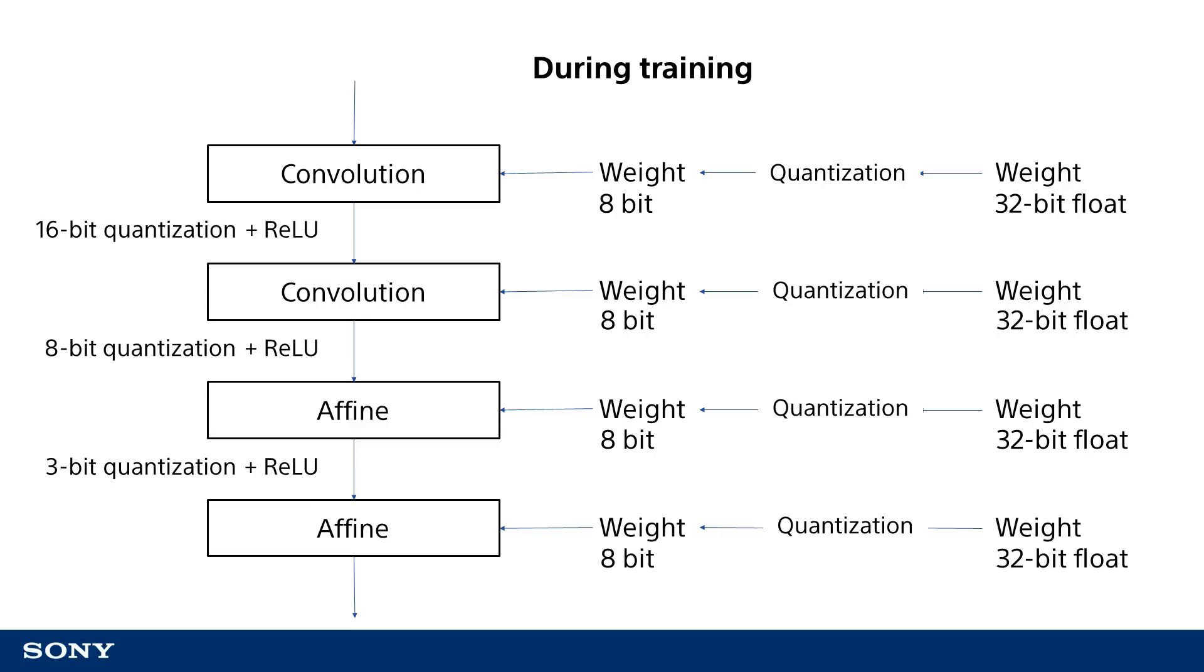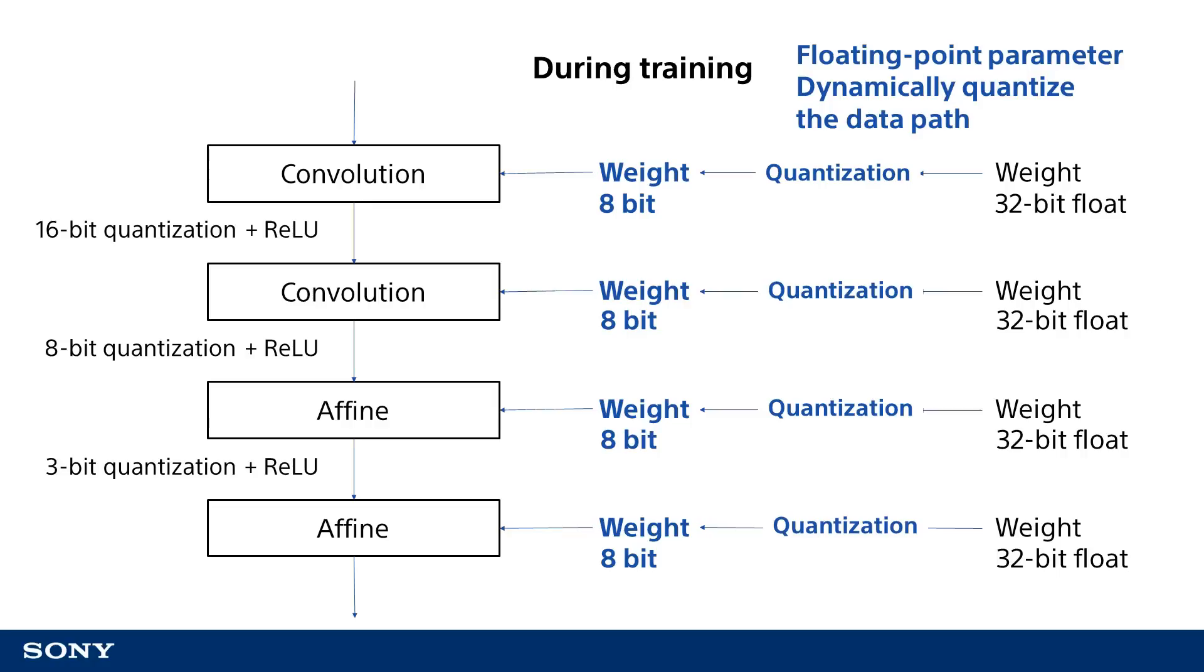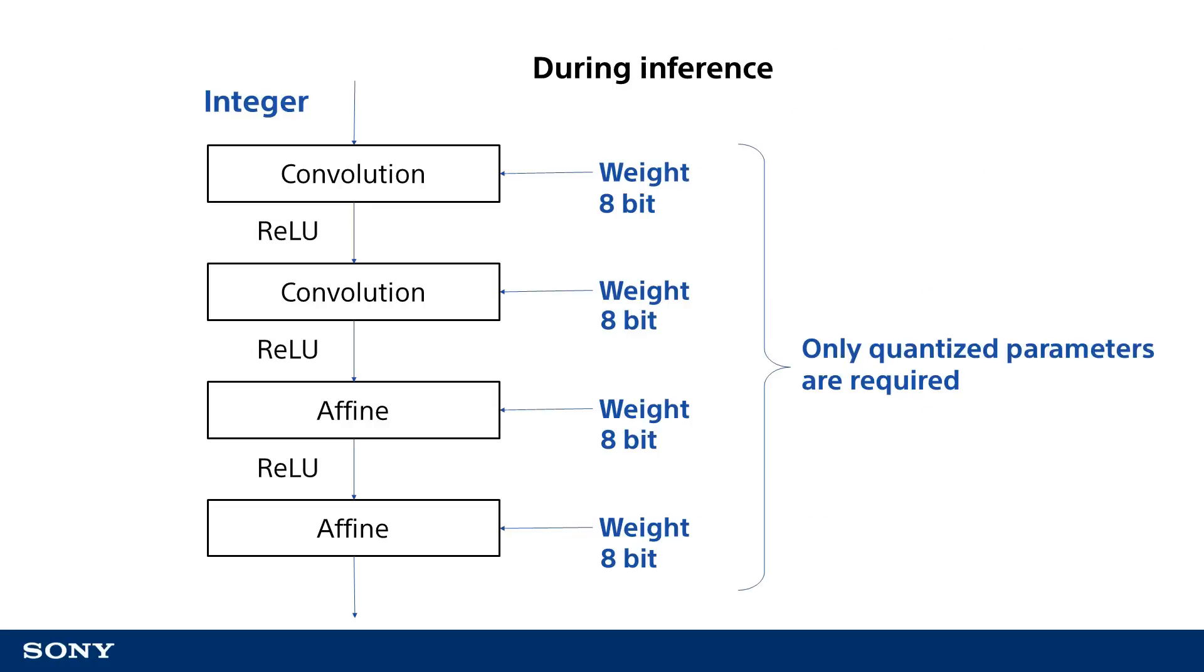In other words, parameter values will be stored as floating-point values during the training process. Then parameters will be updated while quantization layers are used to dynamically quantize weights and data. Afterwards, the final quantized parameters will be used when running inference so that calculations are performed using integers resulting in high performance and the ability to run inference using quantization.